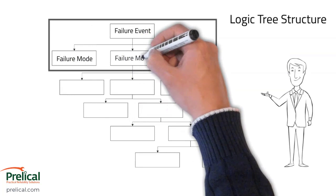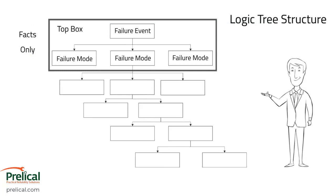At the top of the logic tree we have two levels: the failure event and the failure modes — this is called the top box. It's important that the failure event and failure modes are all facts. If they're not facts, you'll start with assumptions and will not get to the root cause. The failure event is the consequence — the reason you're doing the analysis. The failure modes are the factual modes of failure that you know, such as a bearing failing or a shaft fracturing.